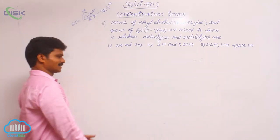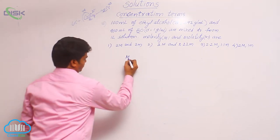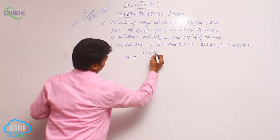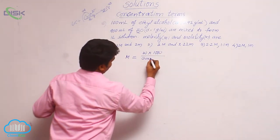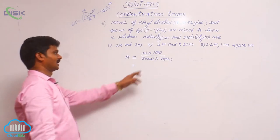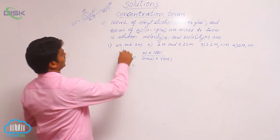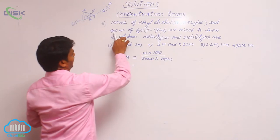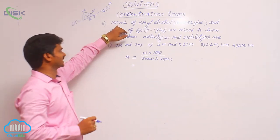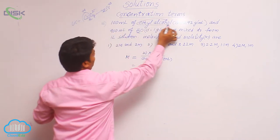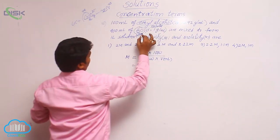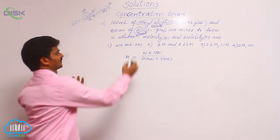First, let us find out the molarity. The molarity formula is: weight of solute multiplied by 1000, divided by gram molecular weight of solute multiplied by volume in ml. Here, since water is 900 ml and ethyl alcohol is 100 ml, water is in larger amount, making water the solvent and ethyl alcohol the solute.